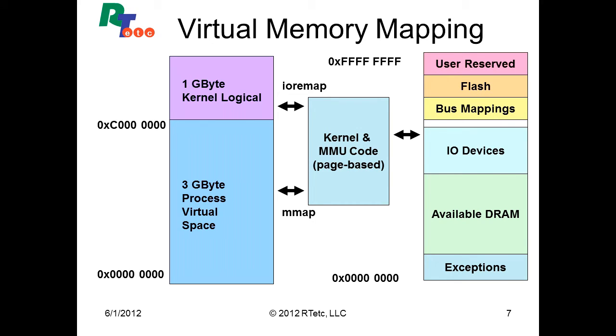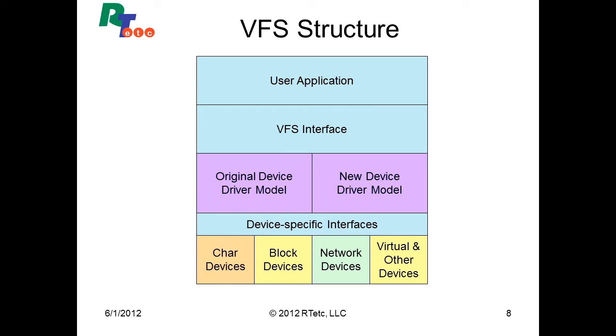Covering virtual memory is a key factor in understanding the use of Linux in general and also in embedded systems. The virtual memory context, which allows for the protection of one application running in one process from another application running in another process, is a key aspect in the use of embedded Linux for embedded systems development.